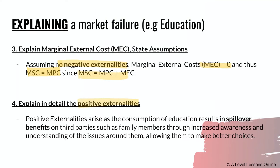Positive externalities arise because the consumption of education results in spillover benefits to third parties — such as family members — through increased awareness and understanding of issues around them, allowing them to make better choices. You must clearly define who the third party is. In education, it could be parents, grandparents, or friends who gain additional knowledge passed on by the educated consumer.